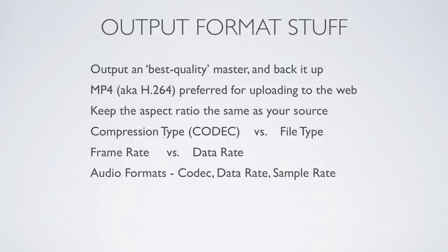Frame rate and data rate are completely different things that can be confusing if you're not familiar with them. Frame rate is how many frames per second your video was shot at — probably 30 frames per second. Data rate is basically how fast you're allowing the data to go through the pipe to make your pictures happen. Some internet connections have lower data rates, so you want to compress your file so it can get through that pipe. A higher data rate means better quality.